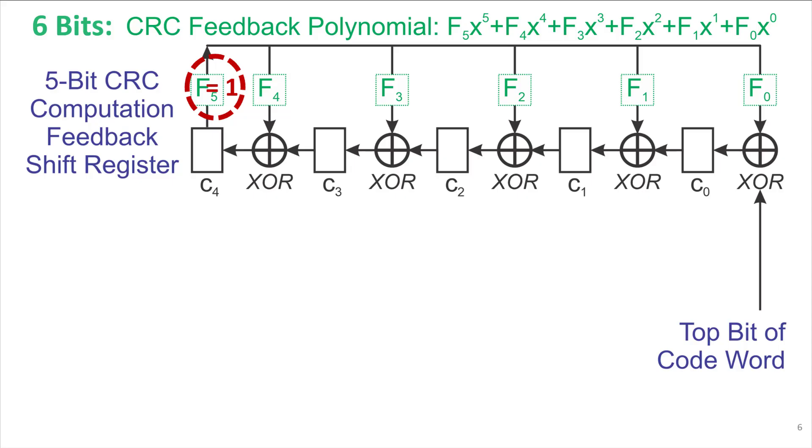Now, how does this hardware work? The idea is that it's a shift register where every one of the rectangles c0 through c4 contains one bit of information. And the XOR symbols are gates that take two inputs and produce an output. In this case, the input to c0 is the top bit through f0, XORed with the top bit of the codeword.